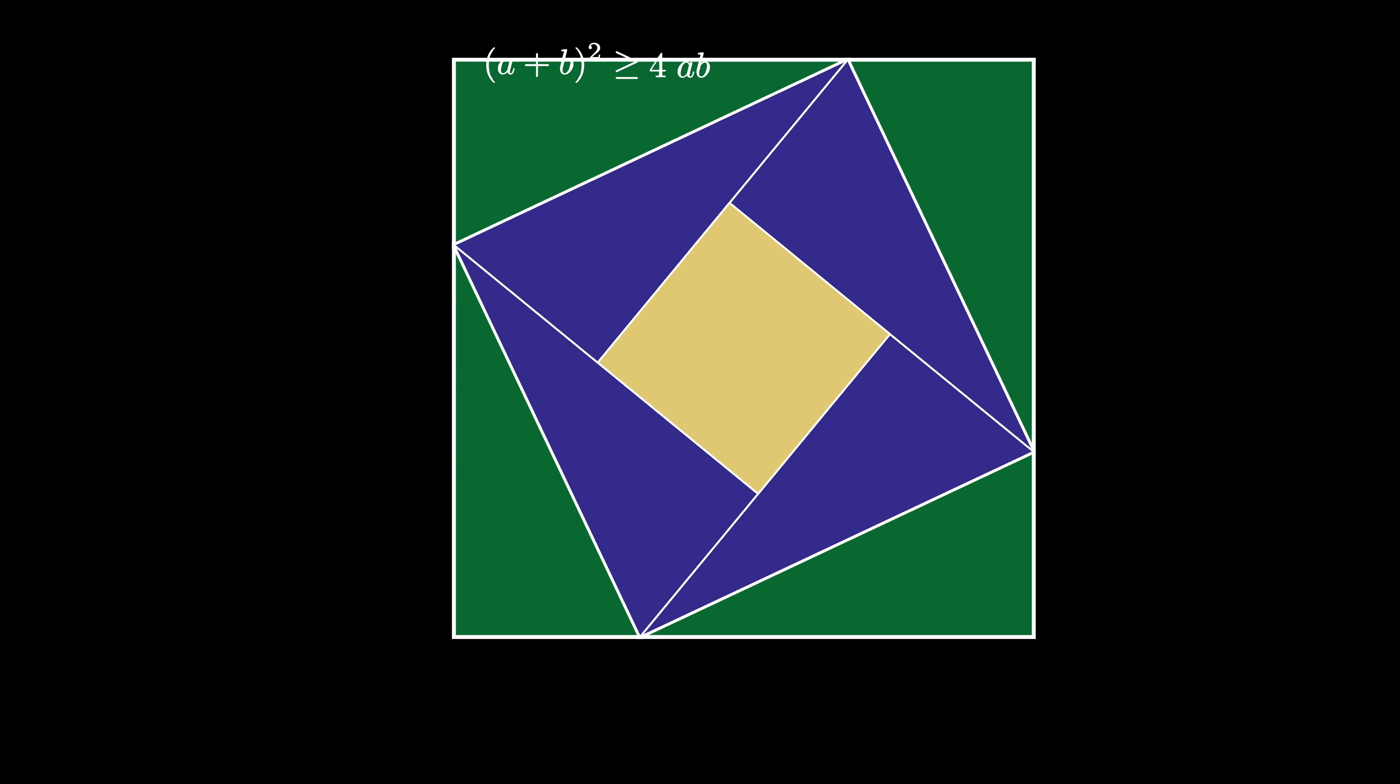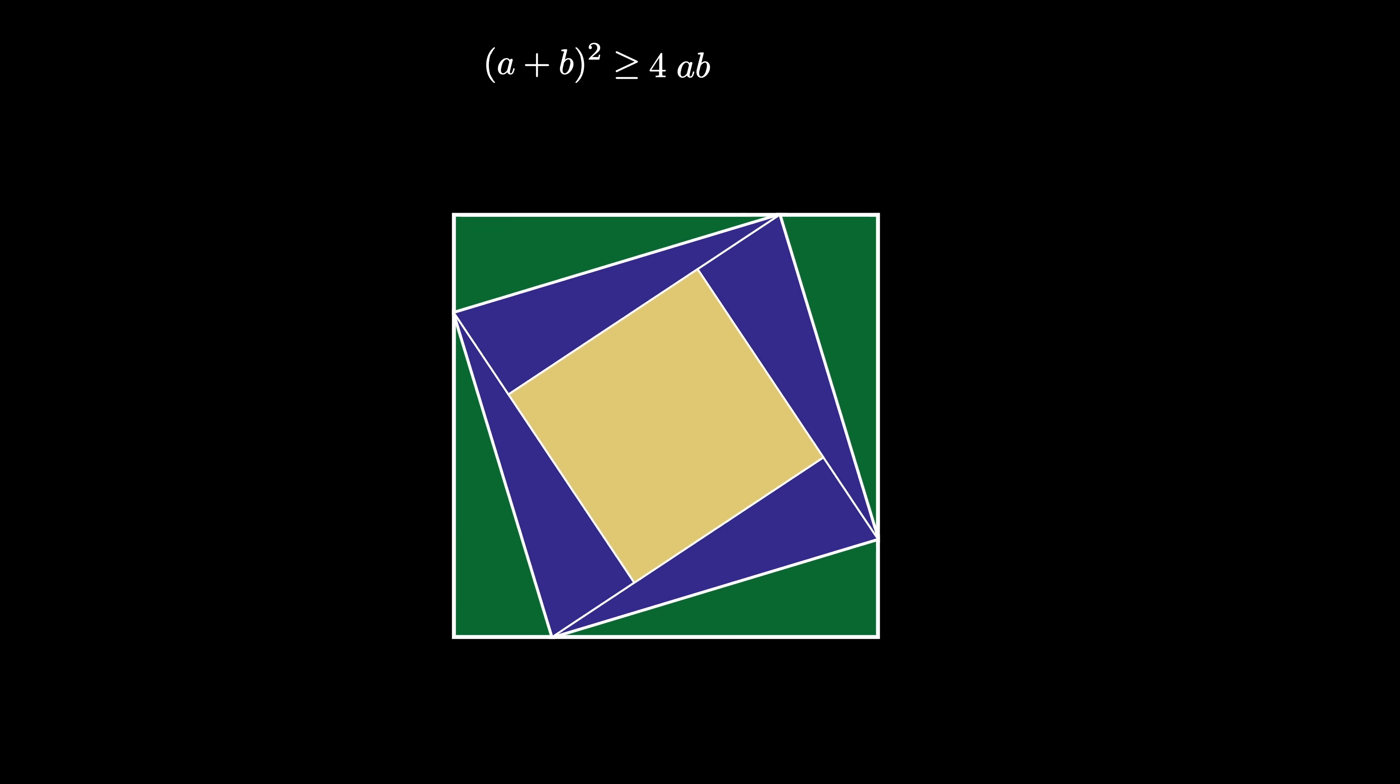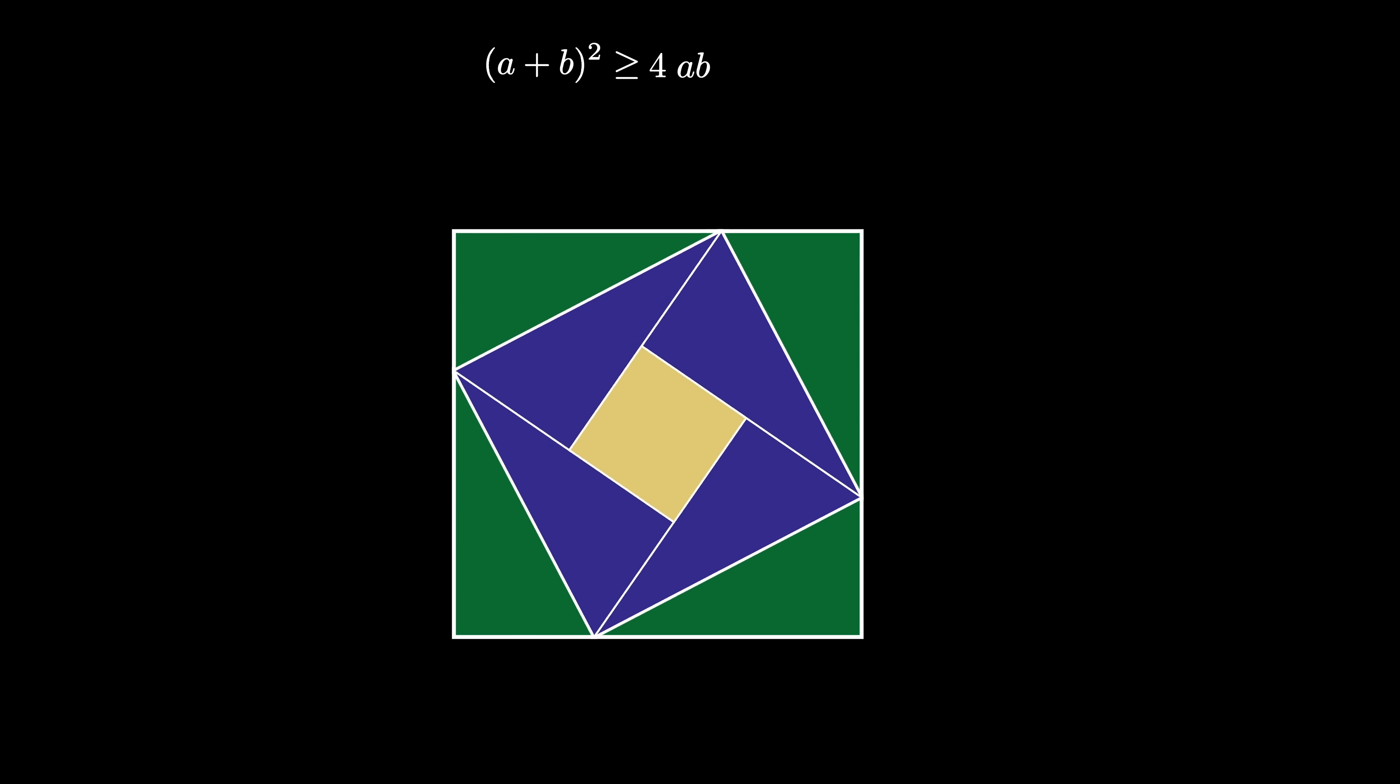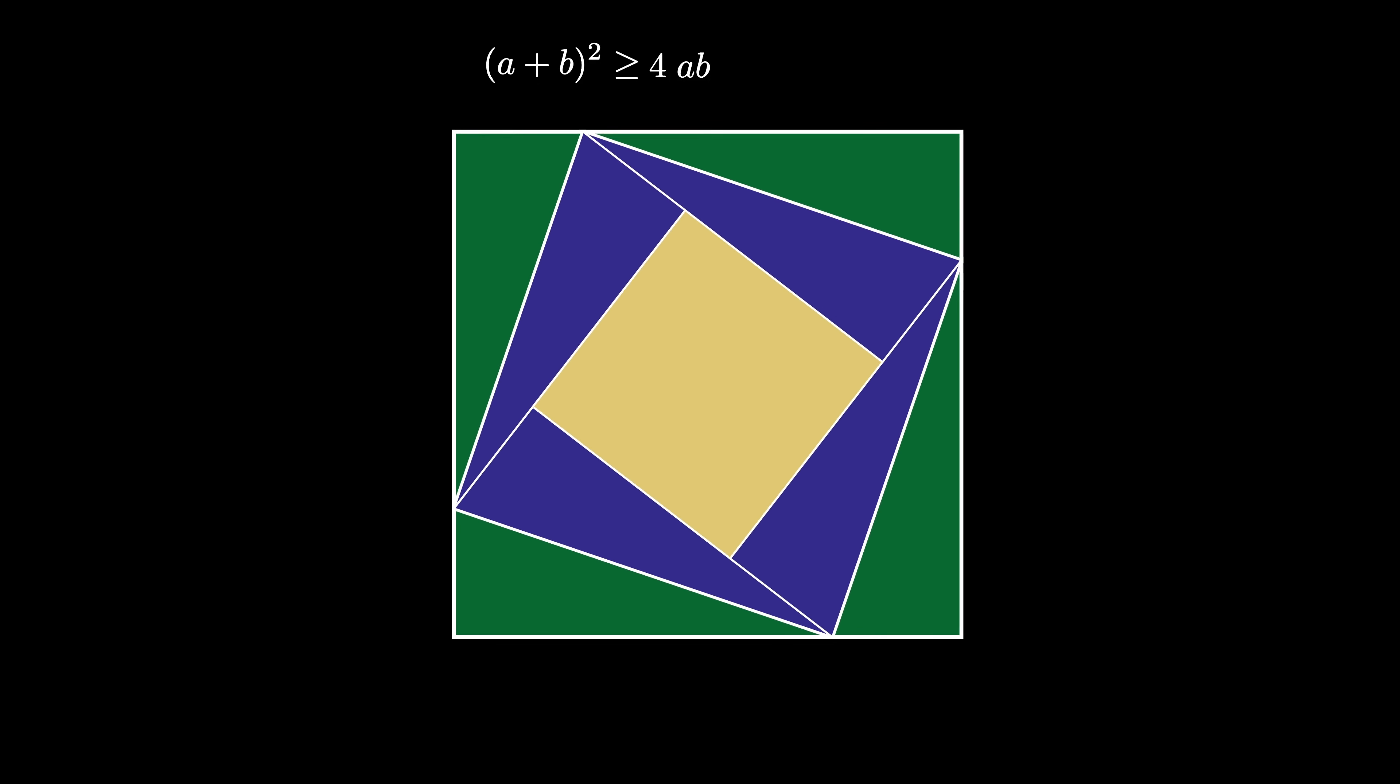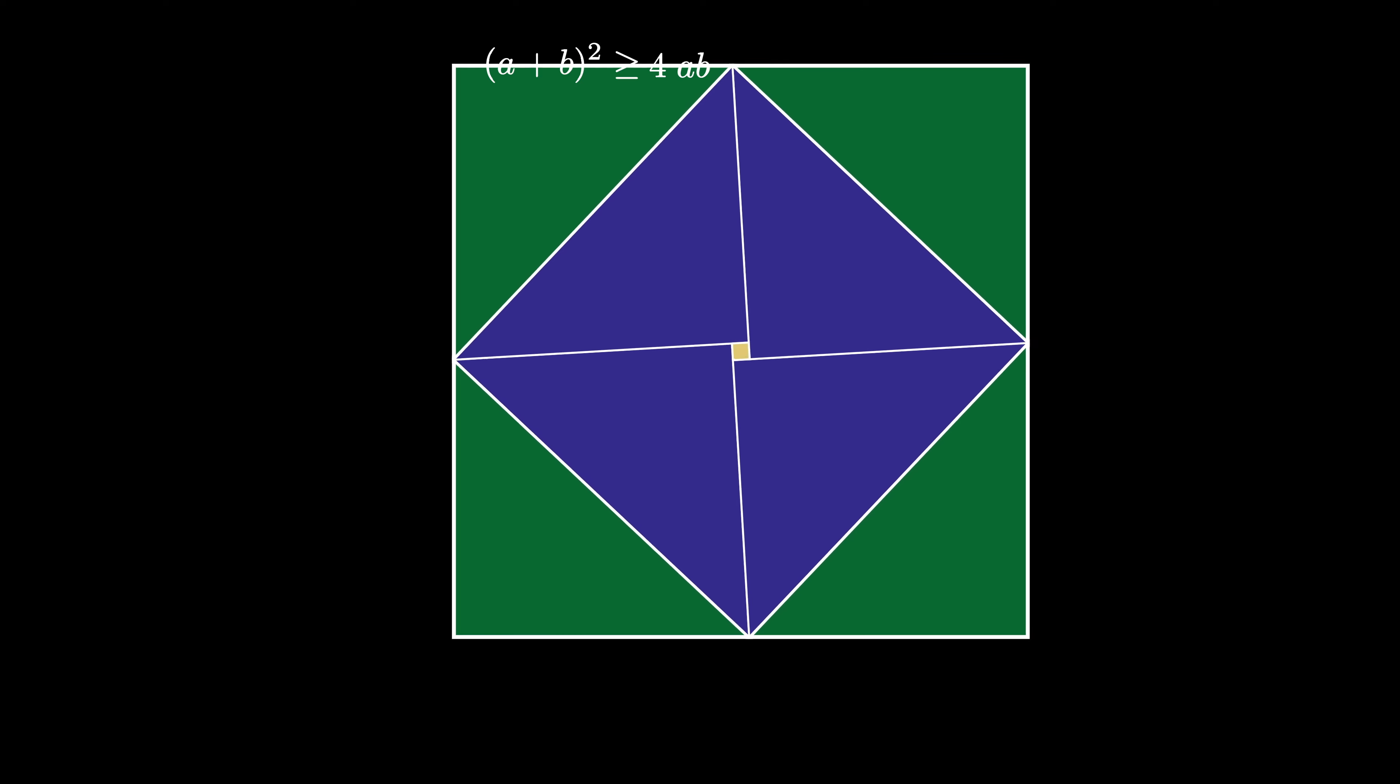As we vary a and b, we see that the inner square gets larger and smaller depending on the sizes of a and b, but we also note that the square is always there, except in the one instance when a and b are exactly the same, so that that square shrinks to 0 area.